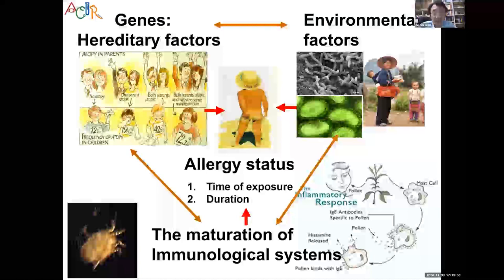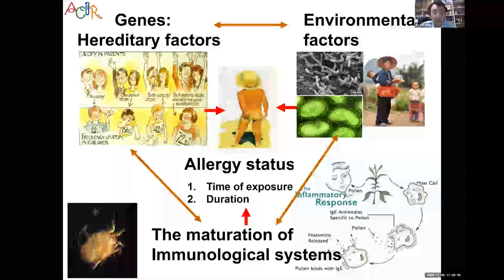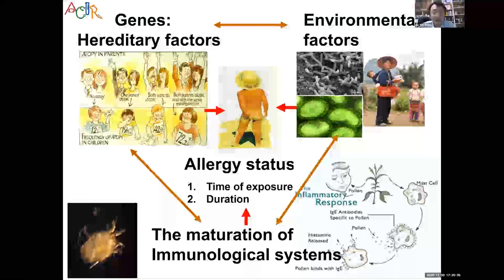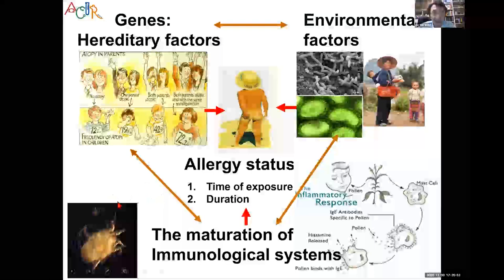In a broad view, allergy disease development depends on three intertwined factors. First is the genetic factor — if parents have allergy disease, their offspring have a greater chance of becoming allergic. However, genetic factors alone cannot explain why allergy disease has increased worldwide, so environmental factors are also very important.